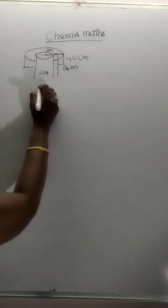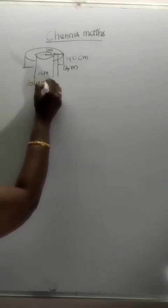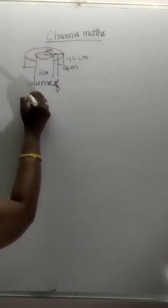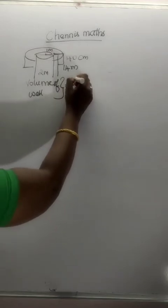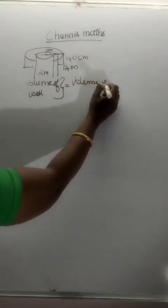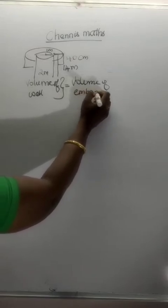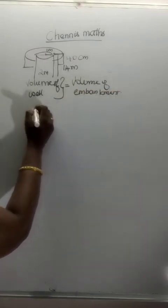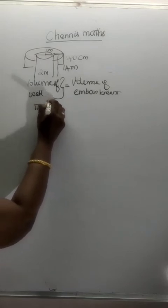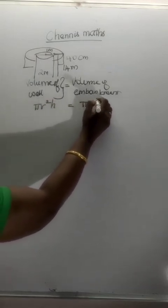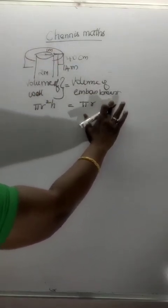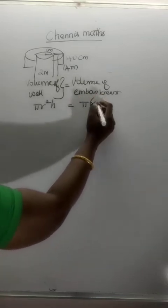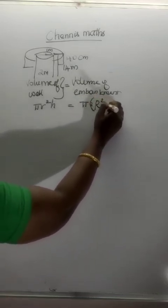Volume of the well is equal to the dugout mud. The dugout is equal to the volume of mud used for the embankment — volume of the embankment. We can also find the width of the embankment. We use pi into (capital R squared minus small r squared) into h.